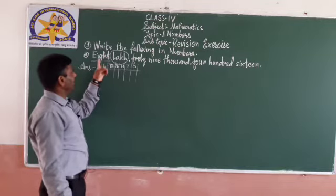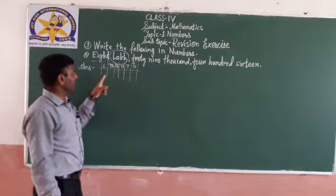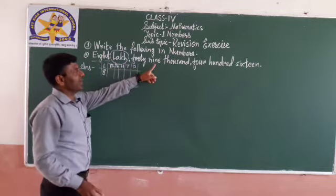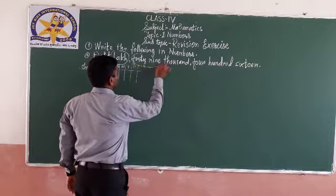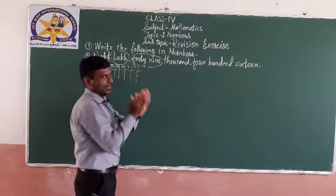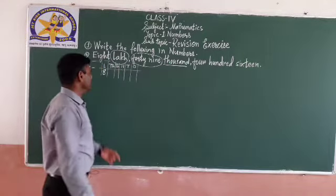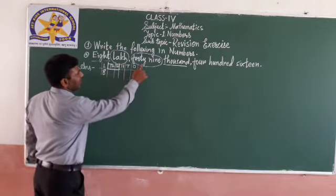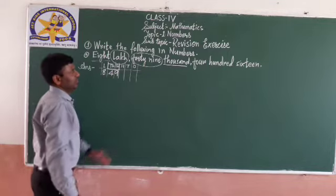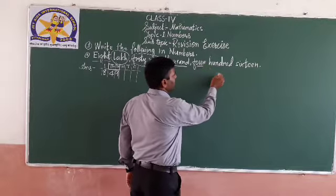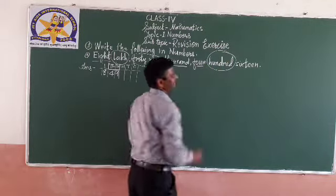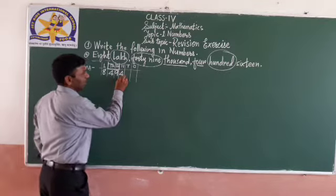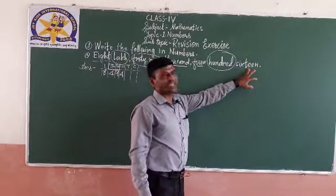8 is in the lakhs place. 49 is in the thousands period — 4 is in the ten-thousands place. Write the hundreds place: 100 and 16. It is not 60 — while writing, do not confuse. 16 means 1 and 6.